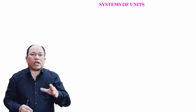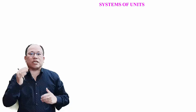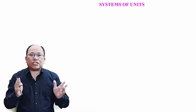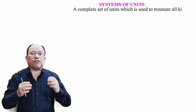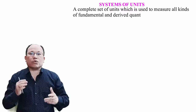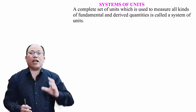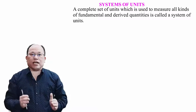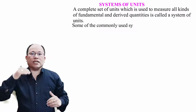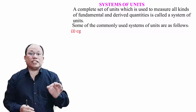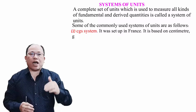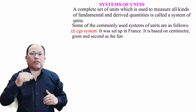Let us come to the next topic: system of units. A complete set of units which is used to measure all kinds of fundamental and derived quantities is called a system of units. Some of the commonly used systems of units are as follows. The first one is the CGS system, which was set up in France. It is based on centimeter, gram, and second as the fundamental units of length, mass, and time.